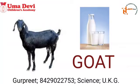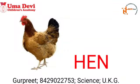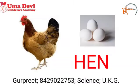Now let's see the other farm animal. What is this? Yes, this is hen. And do you know what we get from hen? Yes, hen gives us eggs. And what is the spelling of hen? H-E-N. Repeat again. H-E-N. Hen. Good.